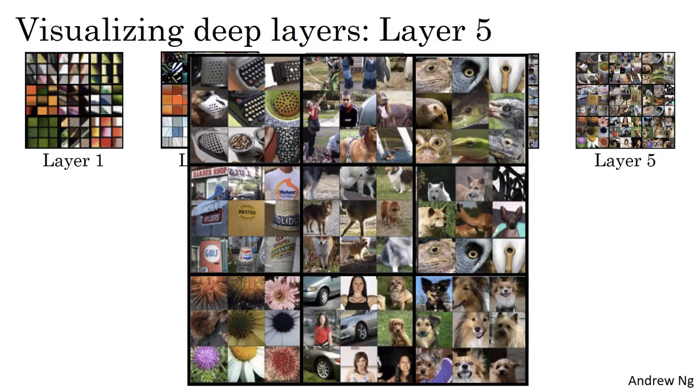And then layer five is detecting even more sophisticated things. And you notice there's also a neuron that seems to be a dog detector, but the set of dogs it's detecting here seems to be more varied. And then this seems to be detecting keyboards and things with keyboard like texture, maybe lots of dots against a background. I think this neuron here may be detecting text. It's always hard to be sure. And then this one here is detecting flowers. So we've gone a long way from detecting relatively simple things such as edges in layer one to textures in layer two, up to detecting very complex objects in the deeper layers.